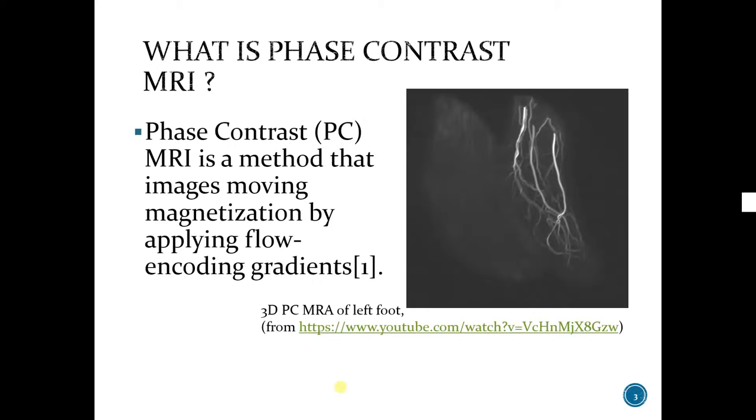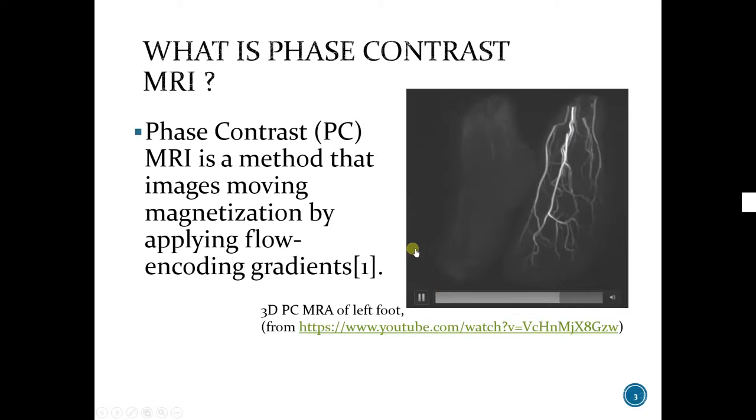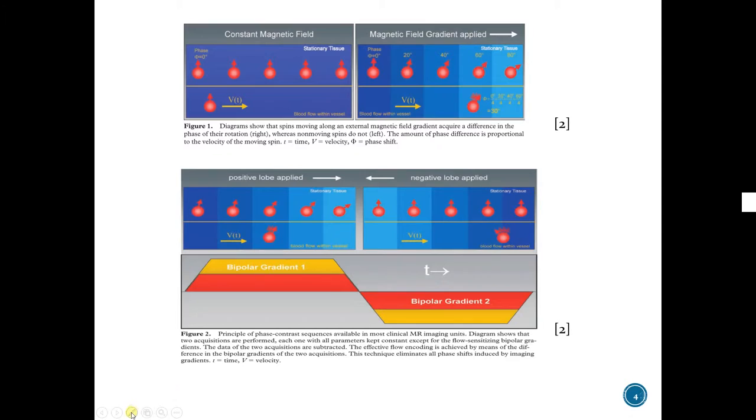What is phase contrast MRI? Phase contrast MRI is a method that images moving magnetization by applying flow encoding gradients. Here you can see 3D PC MRA of left foot.